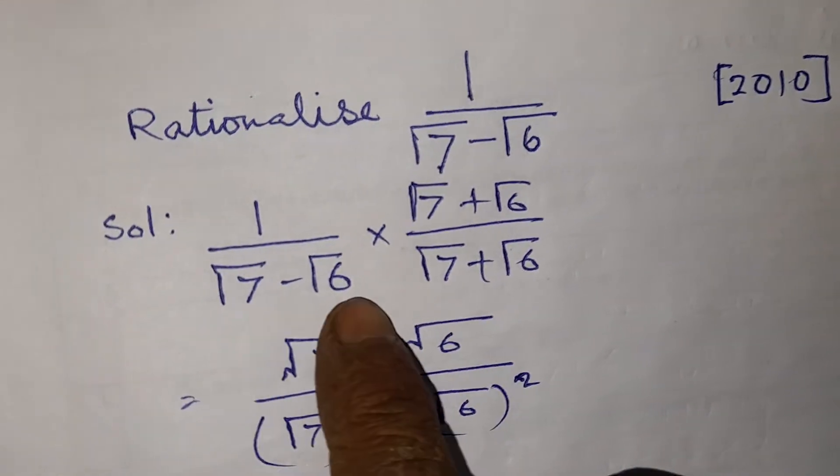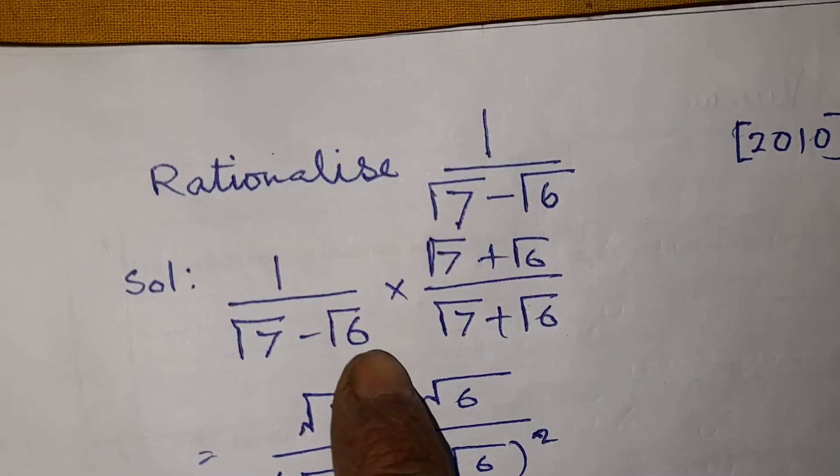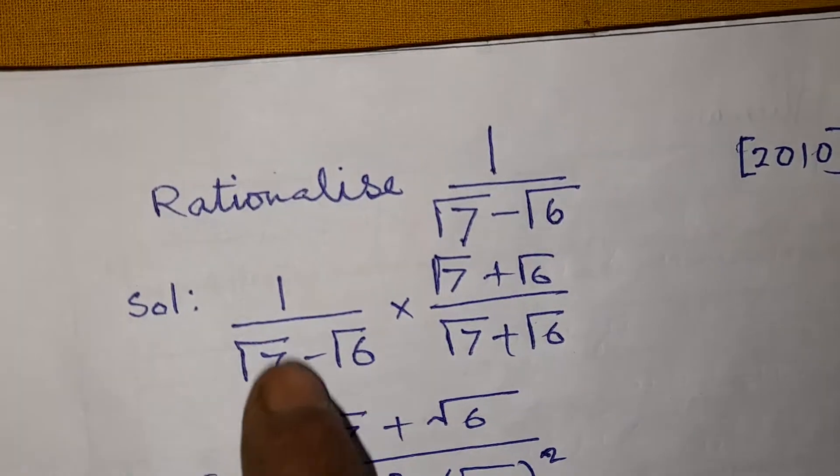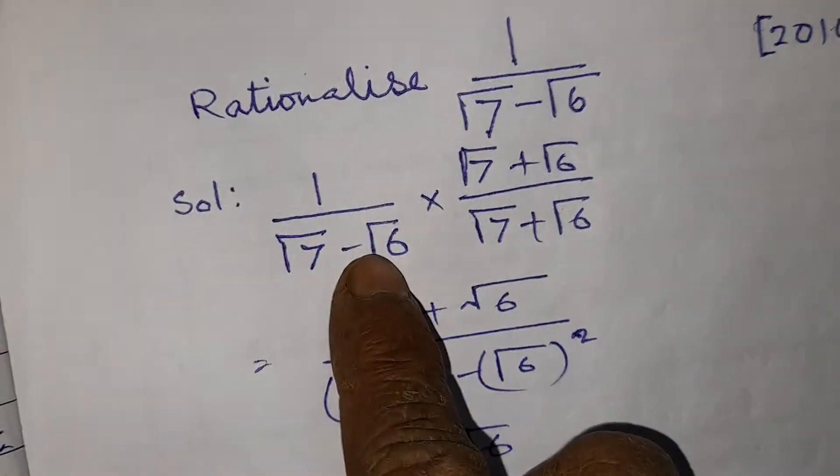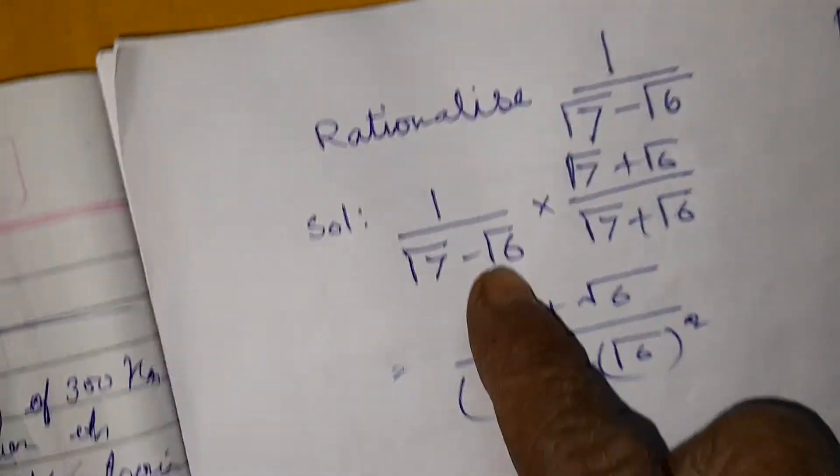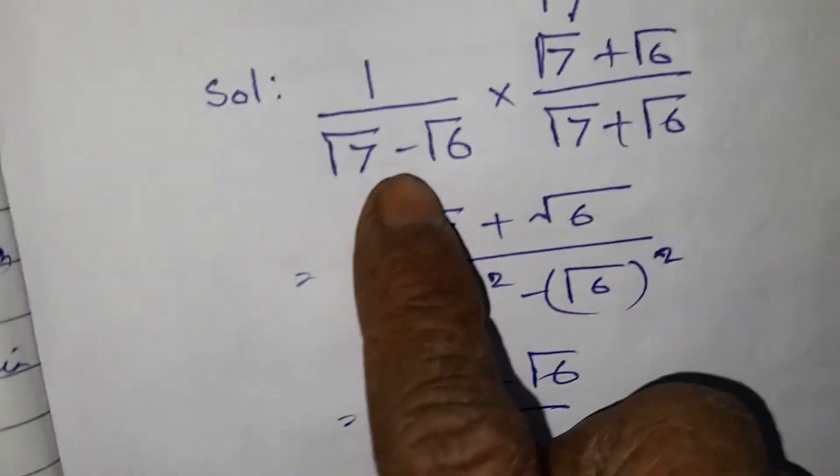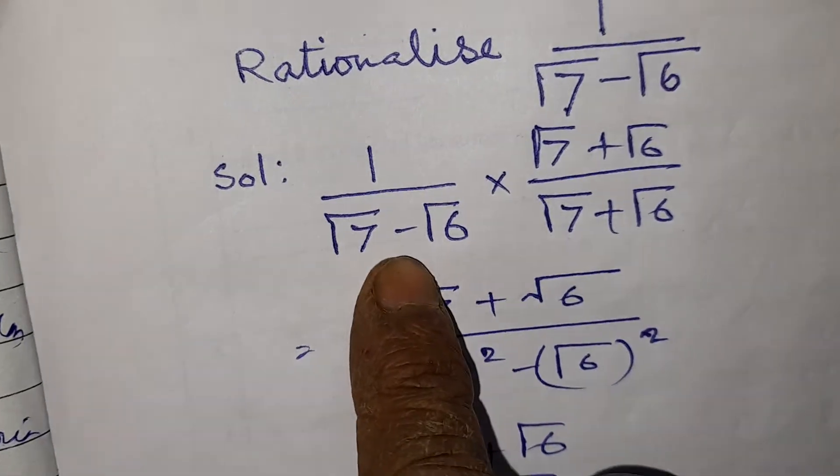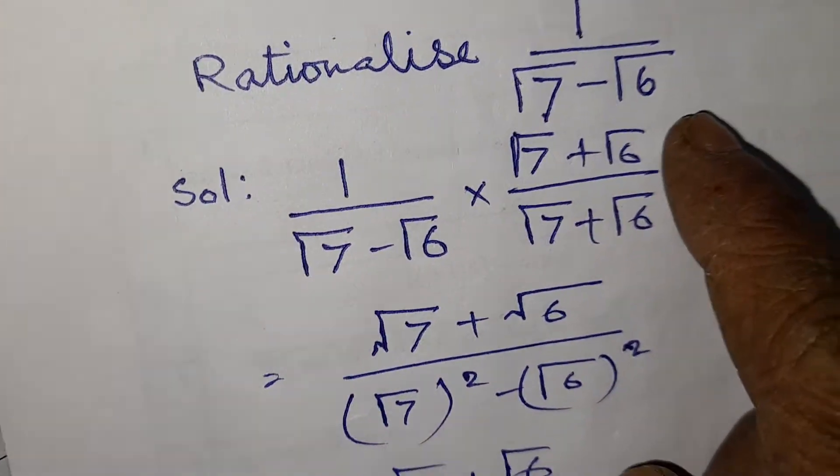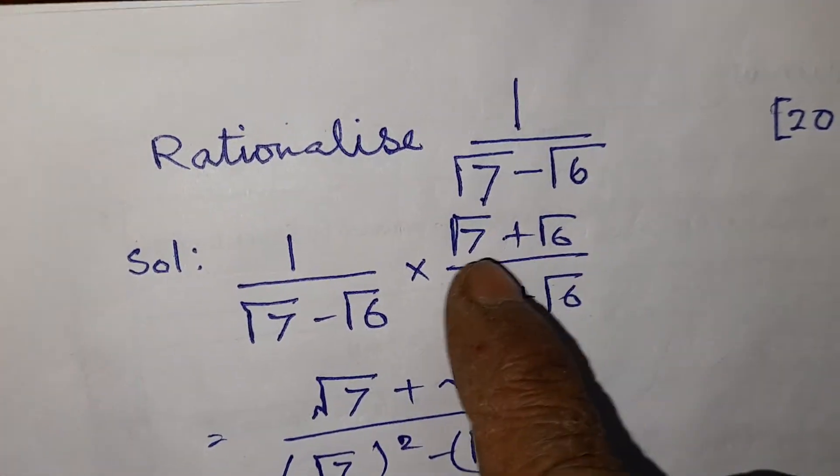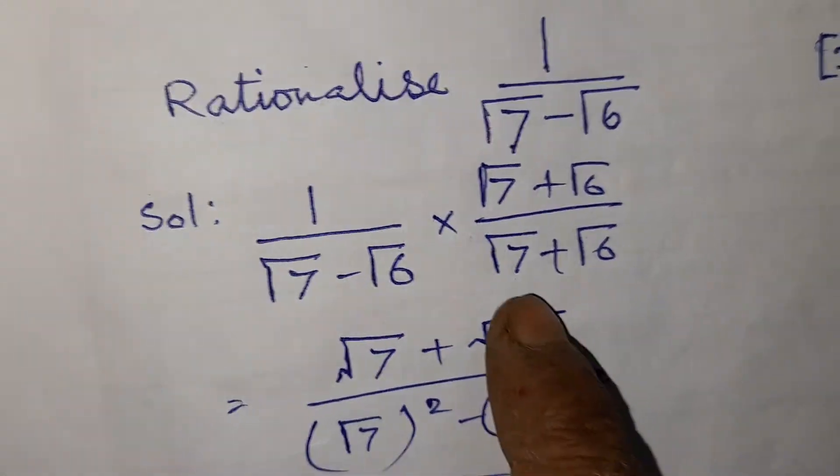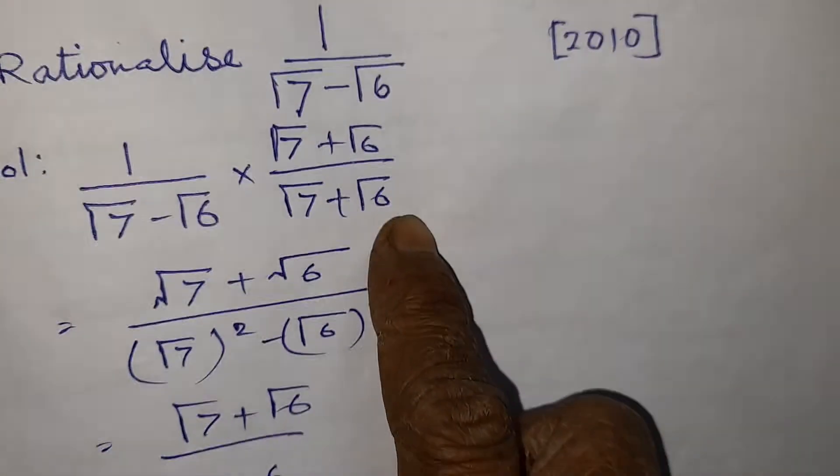It has a particular way to remove the root from the denominator. So the question is 1 by root 7 minus root 6. We have to multiply with the opposite sign. If it is minus, we will multiply numerator and denominator with root 7 plus root 6 by root 7 plus root 6.